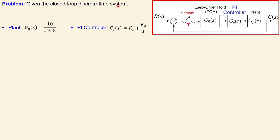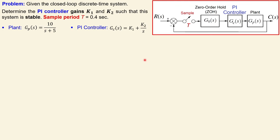Let's look at our problem. We have a closed-loop discrete time system given in general form. We have the plant, which is just a first order system given in the Laplace domain, and a PI controller also given in the Laplace domain with k1 and k2 as the gains. What we want is to determine the PI controller gains k1 and k2 such that this system is stable. The sample period is 0.4 seconds. We don't bother about specific specifications like steady state error or overshoot - just stability.